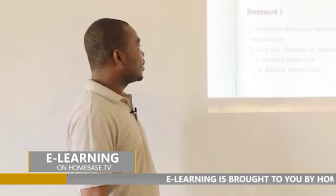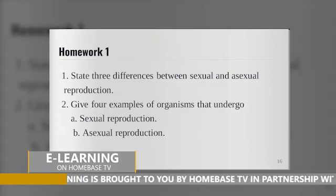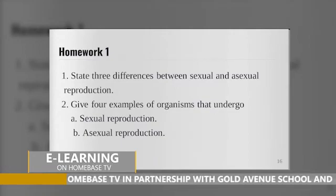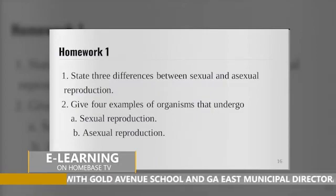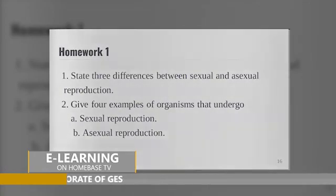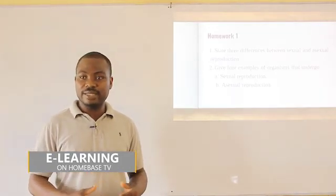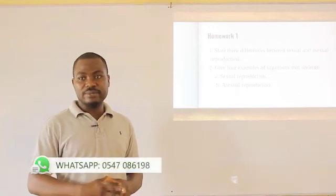Let's go on to the next stage. After trying these questions, I want you to have this homework and try your hands on it. Homework: Question 1 — state three differences between sexual and asexual reproduction. Question 2 — give four examples of organisms that undergo A, sexual reproduction, and B, asexual reproduction. When you are done, kindly send your answers to the number displayed on the screen or to all our social media handles.